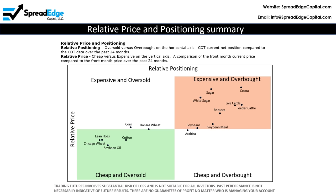The next section of the commodity outlook is relative price and positioning. Relative positioning is oversold versus overbought on the horizontal axis, looking at commitment of traders' current net position compared to COT data over the most recent 24-month period. Relative price is cheap versus expensive on the vertical axis — a comparison of the front month current price compared to the front month price over the most recent 24-month period. Cocoa has been amongst the most overbought and expensive markets in the ag complex for the past several weeks. The other indicators suggest that Cocoa is ready to return to more normal levels.